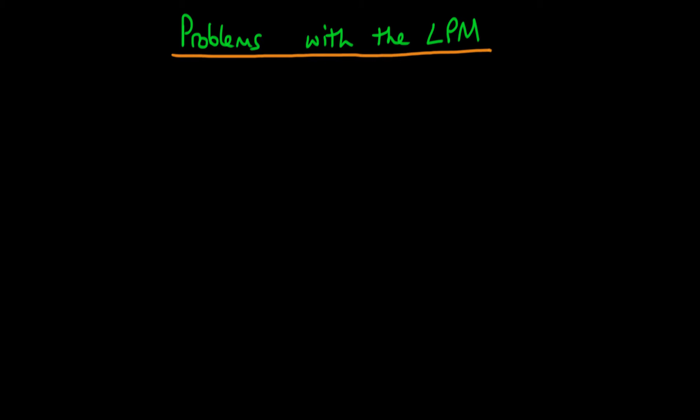In this video I want to start to talk about some of the problems which are associated with the linear probability model. The first problem we're going to talk about is the fact that it allows probabilities to be outside the range which they're normally accepted to be in. So it allows for probabilities which are outside the normal 0, 1 range, and I'm going to explain how that can come about.